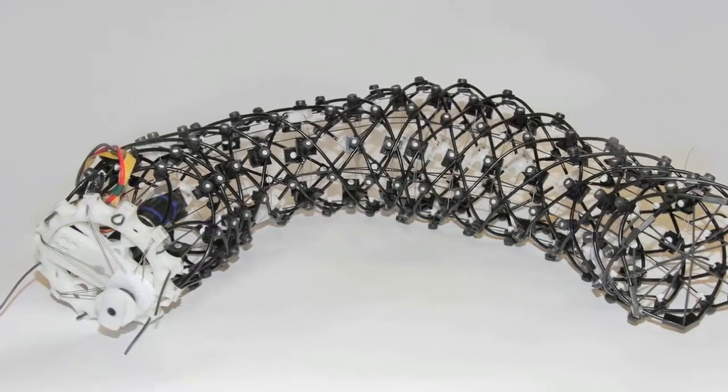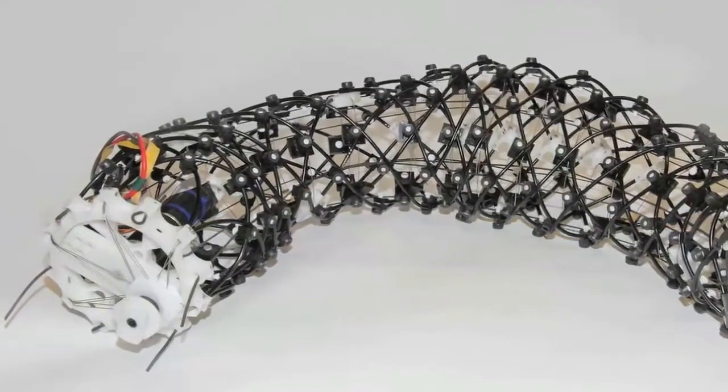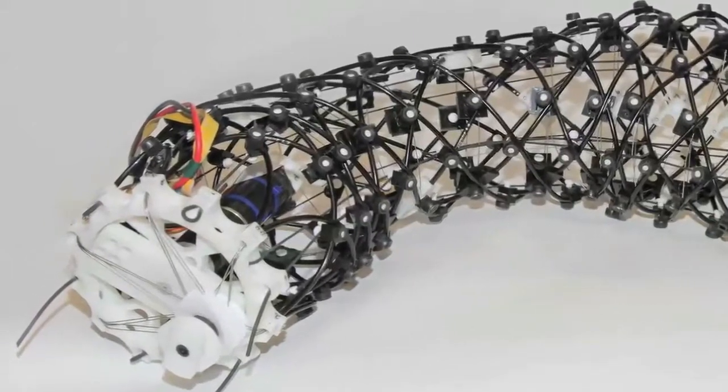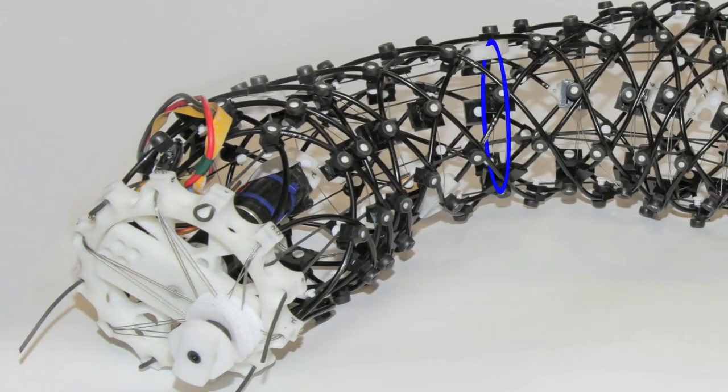To test our understanding of peristalsis, we designed a single degree of freedom actuation scheme that drives all of the circular hoop actuators along the length of the body. The braided mesh antagonistically connects these hoop actuators to lengthwise return springs.